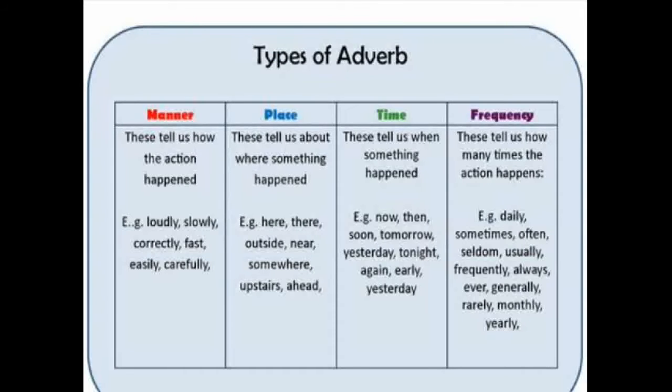Types of adverb. Number 1: Adverb of manner. An adverb of manner tells us how the action happened. For example: loudly, slowly, correctly, fast, easily, carefully. An adverb of manner tells us about the manner — how a person or animal behaves. In adverb of manner, you ask the question word 'how'.